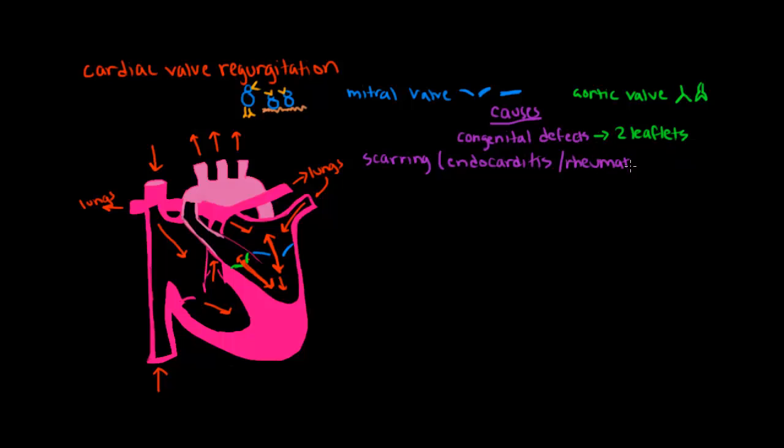Interestingly, before we had stethoscopes, doctors thought that rheumatic fever was the only cause of mitral valve regurgitation, but since then, we've learned that is not the case. Mitral valve regurgitation, in particular, can be caused by heart disease or by a heart attack, both of which can damage the tendons and muscles that allow the mitral valve to open and close properly.